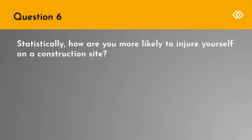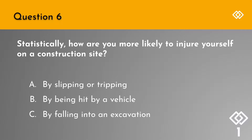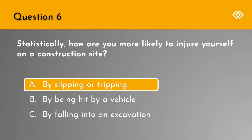Question 6. Statistically, how are you most likely to injure yourself on a construction site? A. By slipping or tripping. B. By being hit by a vehicle. Or C. By falling into an excavation. The correct answer is A. By slipping or tripping.